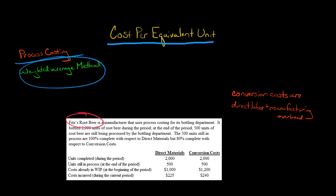So let's take a company called Fitz's Root Beer. They're a manufacturer that uses process costing for their bottling department. In real life, companies that use process costing usually have a lot of different departments, and the costs flow through from department to department. But to make this example simple, let's just focus on this one bottling department.